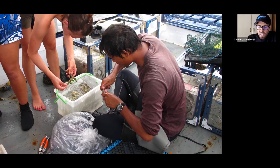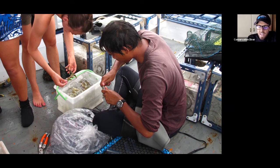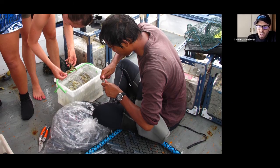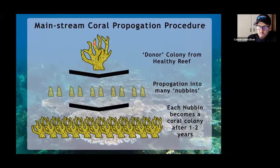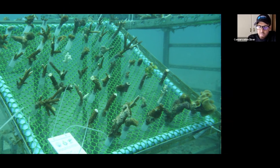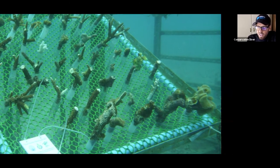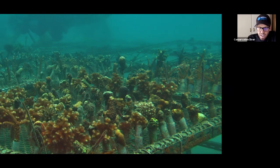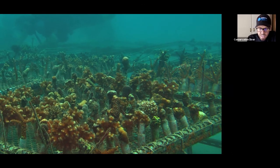Every polyp has the potential to grow a new colony. So you cut this up into tons of little pieces, throw it on your nursery, and every single one of these pieces — we saw in that graph it was like 79% survival — will become an adult colony.